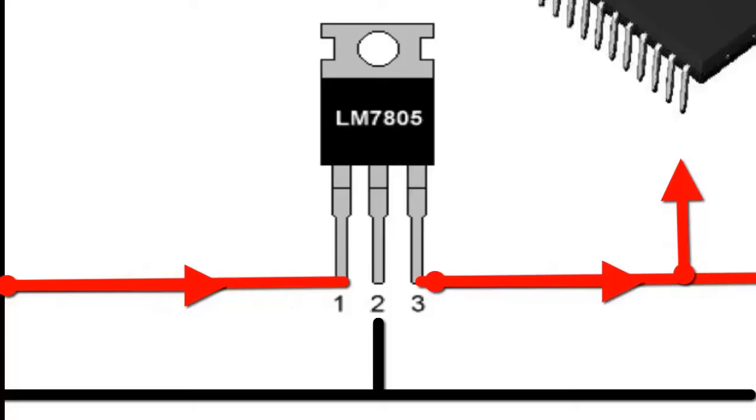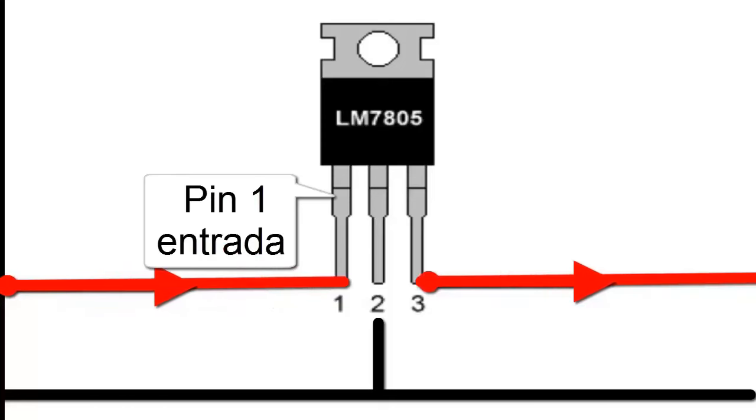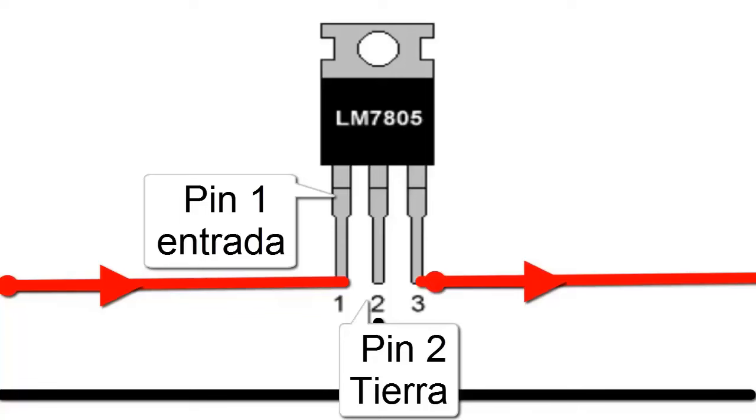The 7805 regulator has three pins. Pin 1 is connected to the input voltage, which in many air conditioning electronic boards has a value of 12 volts, originating from another regulator, in this case, the 7812.